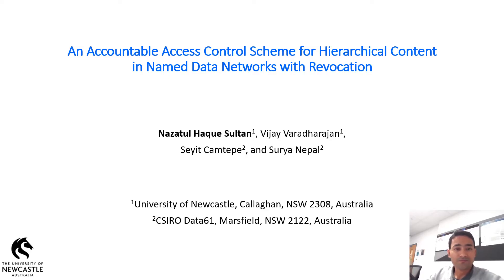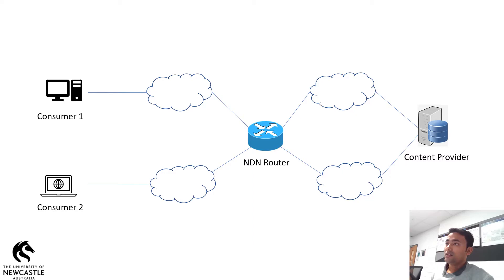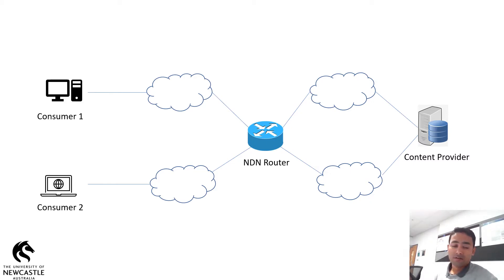Before moving forward I would like to give a brief overview on Named Data Networking. I'll refer to Named Data Networking as NDN in short for the rest of my presentation. NDN is a new internet architecture designed to cope with the shortcomings of the traditional IP-based networking architecture. I'm not going to discuss them in this presentation as you can find them in the papers included in the references.